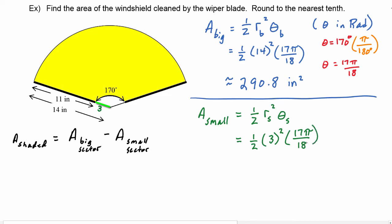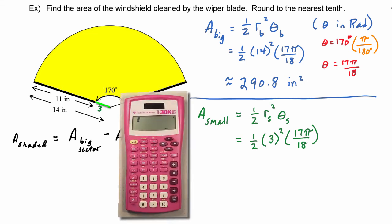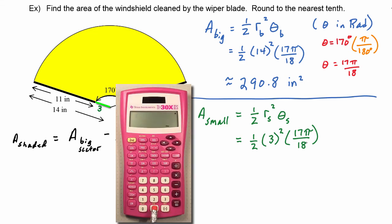And we're ready to go back to our calculators now. So we'll enter 0.5 times 9 (we can do that easily enough in our heads) times 17π divided by 18. Enter.